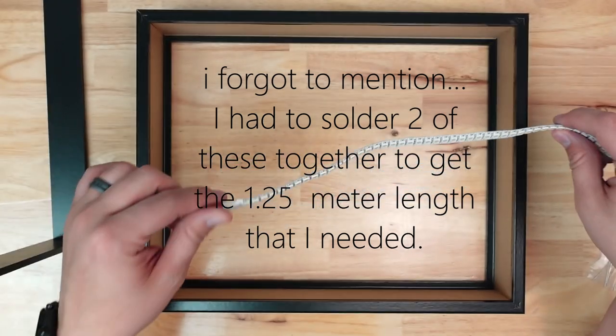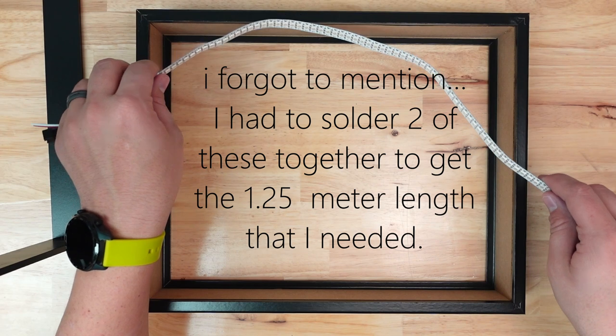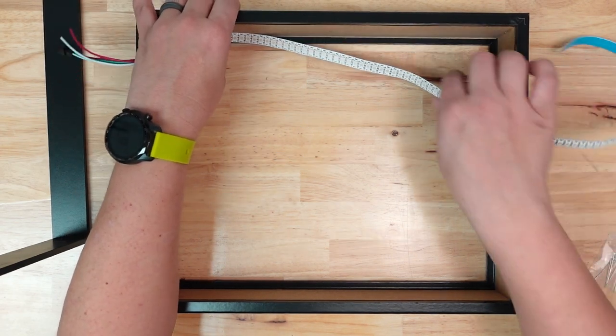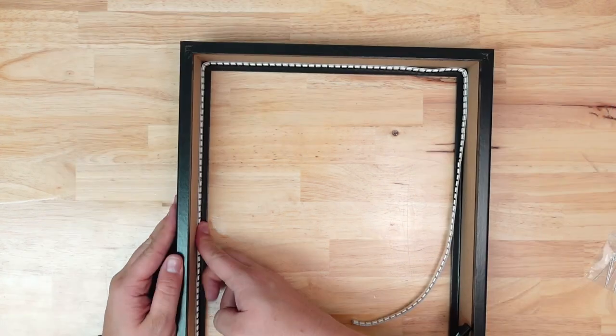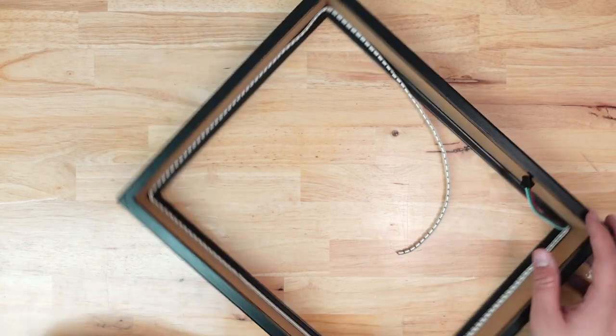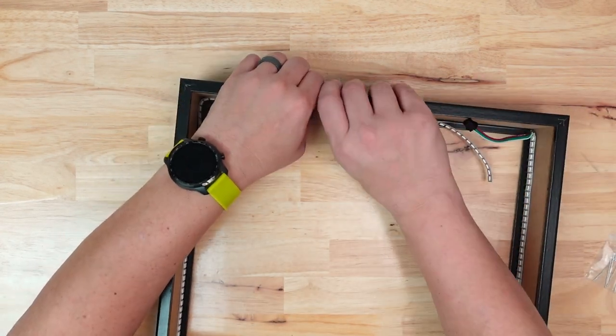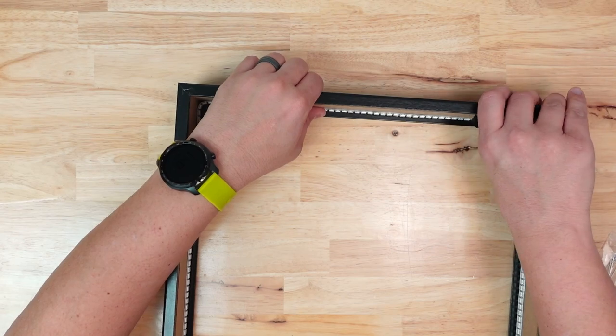We're going to install the LED strip next which I've already cut to length. I started installing the strip in one corner and then ran it all the way around keeping it up against the front edge of the frame. Since I used the high density LED strip you can see that at the corners it curves a little bit and it doesn't quite fit into those corners but that's okay, the lips should cover this and you're not going to see it.